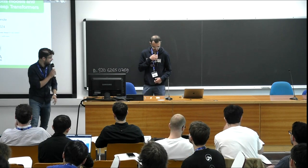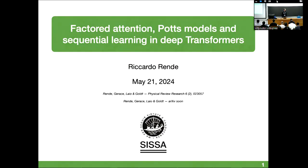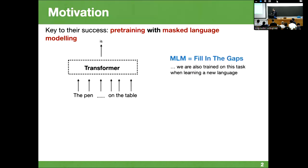Next up, we have Ricardo Rende from CISA. I'm a PhD student at CISA working on transformers. In this presentation, I will talk about factored attention, POTS models, and sequential learning in deep transformers. The architectures I'm going to consider are transformer encoders — bi-directional models famous for being pre-trained under the masked language modeling task.